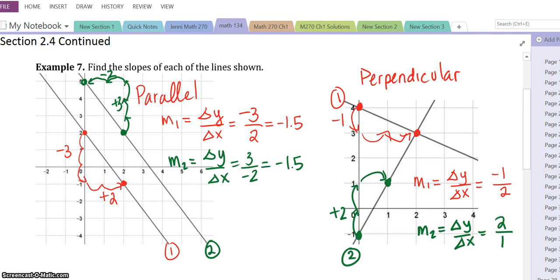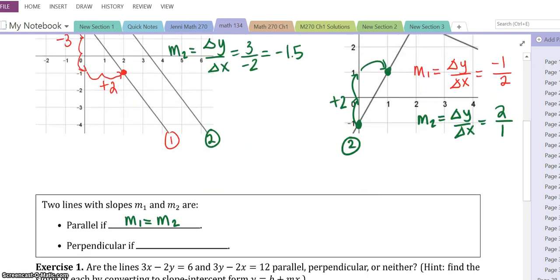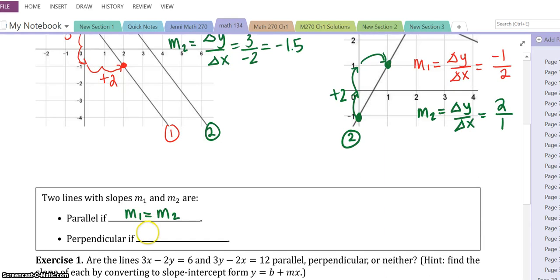Not the same. But if you notice, there are different signs. One's negative, one's positive. That makes sense because this is an increasing line, number two, and number one is a decreasing line. But the run is the rise and the rise is the run. It's flipped. They call that the negative reciprocal. Or you can say it like this: m1 is the negative flip of m2.